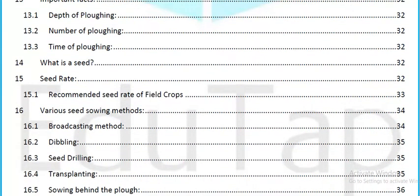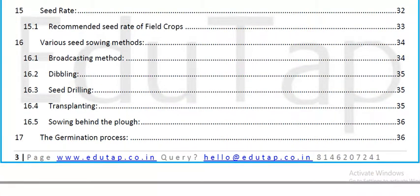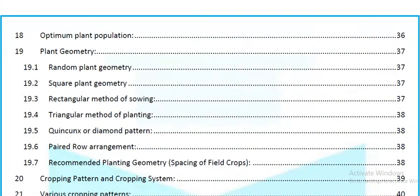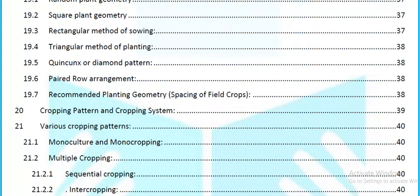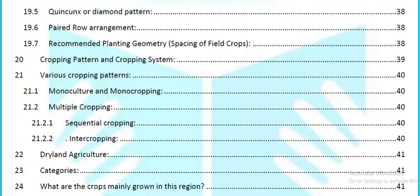Important facts about depth, number, and time of plowing. What is a seed — seed rate, recommended seed rate of field crops, various sowing methods: broadcasting, seed drilling, transplanting, sowing behind the plough, germination process, optimum plant population, plant geometry — random, square, rectangular, triangular, diamond pattern arrangements, and recommended planting geometry spacing of field crops.